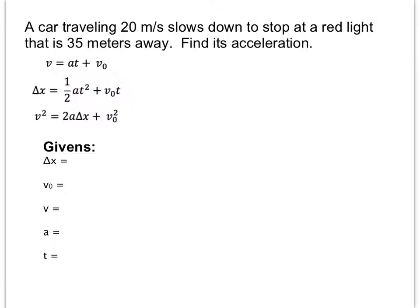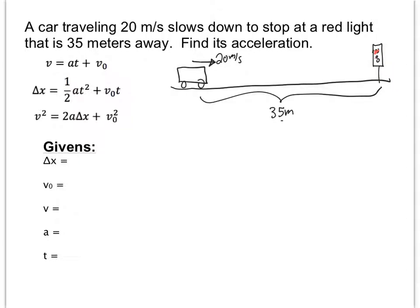Okay, let's try another one. Here we've got a car traveling at 20 meters per second, and slows down to stop at a red light that is 35 meters away. Okay, find its acceleration. So one thing I like to do sometimes is I like to draw a picture. So here we've got our car, and it's traveling at 20 meters per second. And we've got our red light here. And we know that it has to stop and hit the brakes for 35 meters away. We need to figure out its acceleration.